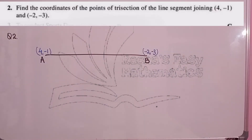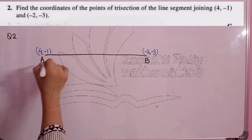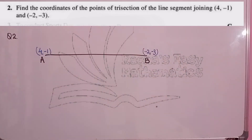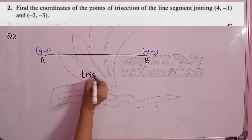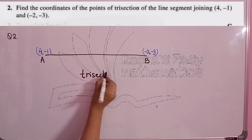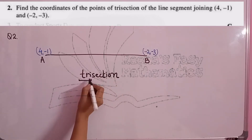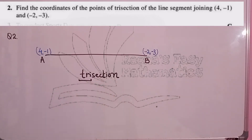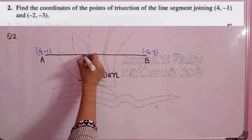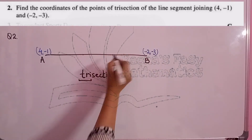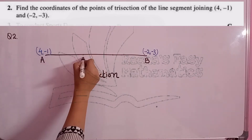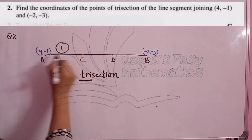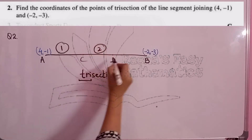In question number 2, we have to find the coordinates of the point of trisection of the line joining (4, -1) and (-2, -3). Here we have a key word: trisection. We need to pay attention to this word. 'Tri' means 3 — we have to divide the line into 3 sections. So if we divide the whole line into 3 sections, we will have 2 points: C and D. So AC is part 1, CD is part 2, and DB is part 3.